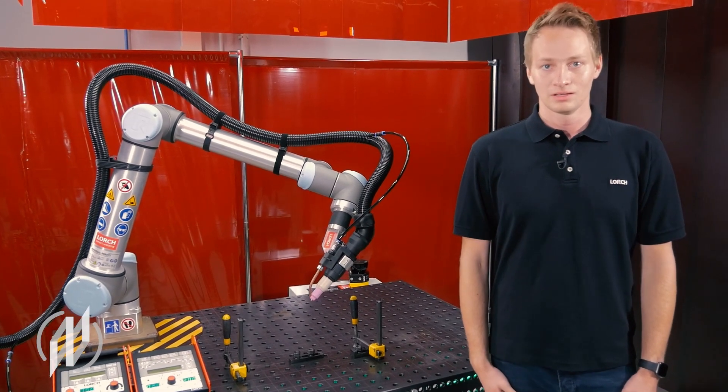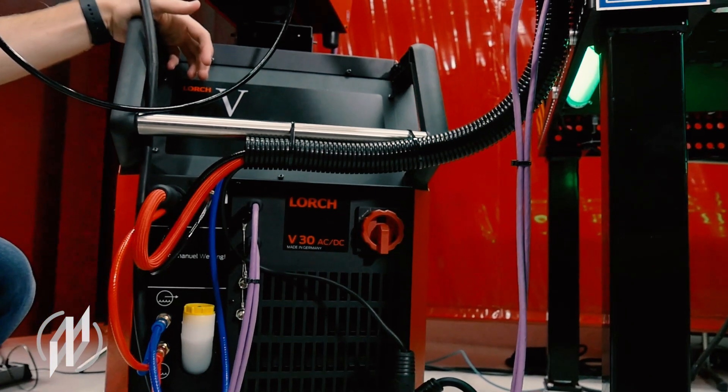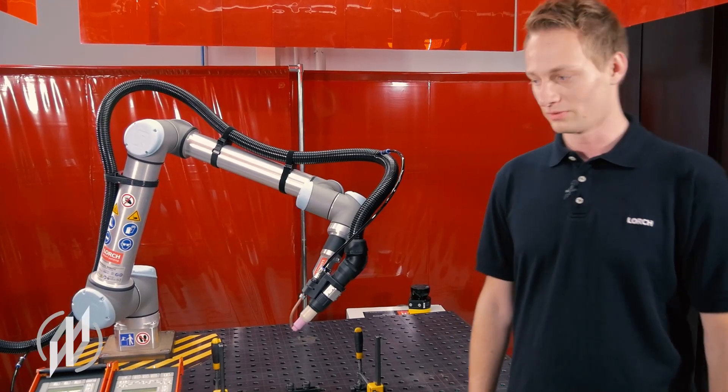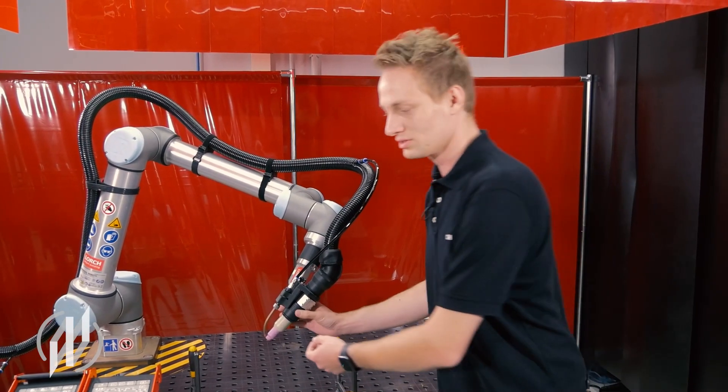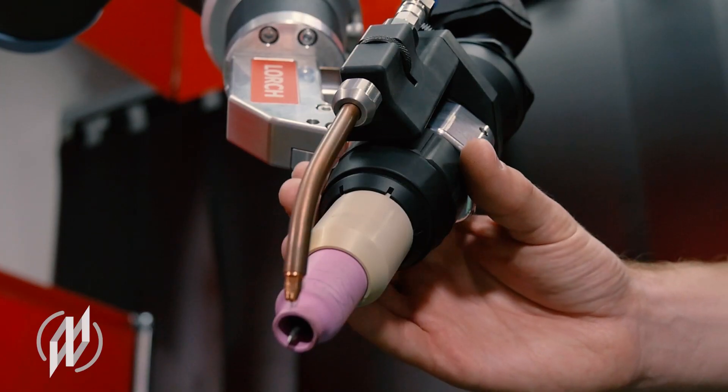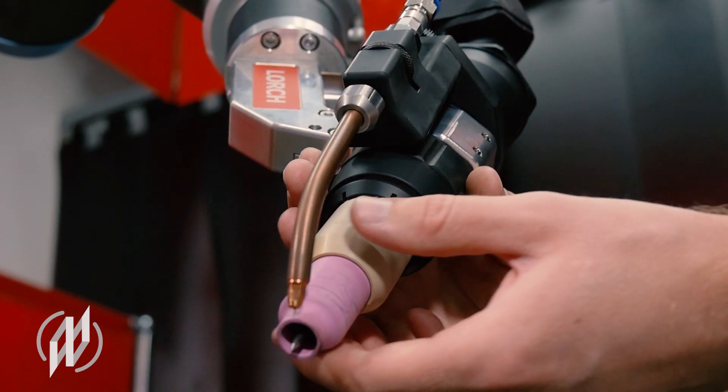Our TIG Corbot welding package incorporates the experience we've gained from working with over 50 Corbot sales partners. For example, we've developed a specially optimized power source for Corbot welding as well as a torch with a bayonet lock which enables quick and easy tungsten change without any problems.